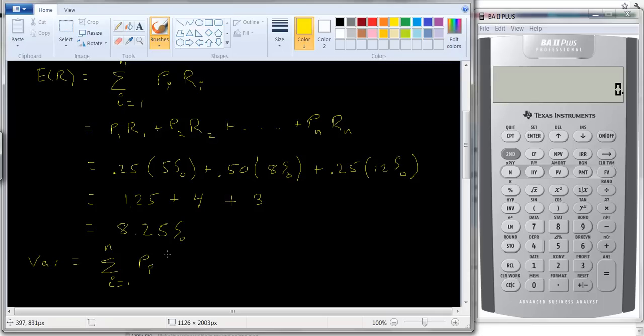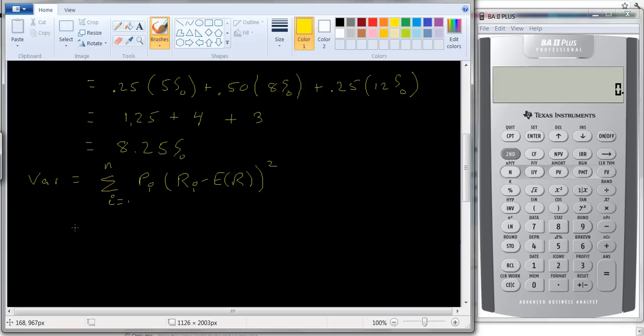The variance is going to equal, I equals 1 to N, probability you're in state of the world i times Ri minus the expected return of R, squared. And we can expand that out. So we get P1 times R1 minus the expected return of R, squared, plus P2 times R2 minus the expected return, squared, on and on for as many possible cases as we have.